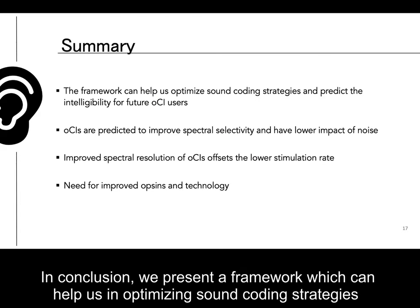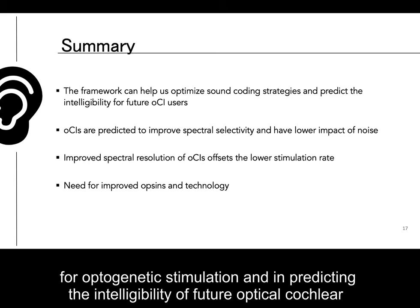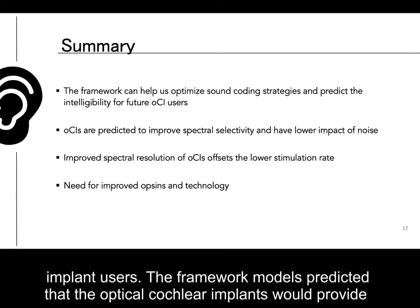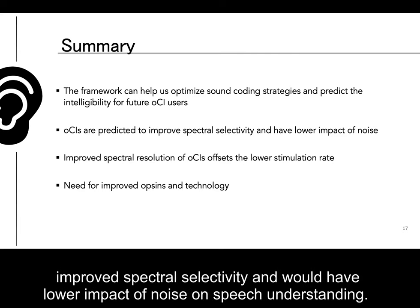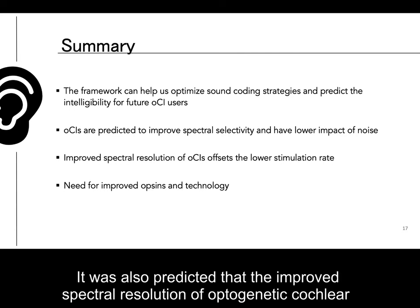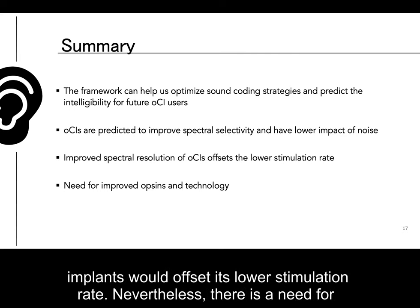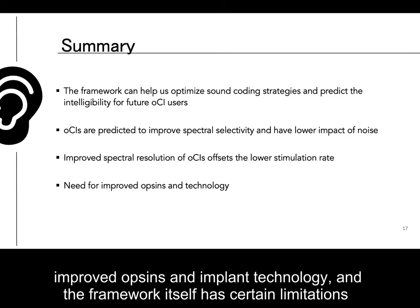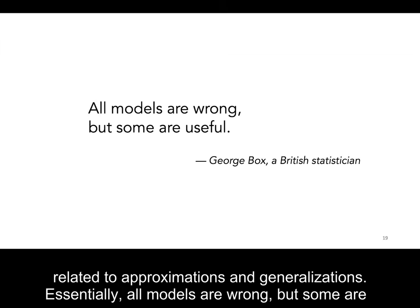In conclusion, we present a framework which can help in optimizing sound coding strategies for optogenetic stimulation and in predicting the intelligibility of future optical cochlear implant users. The framework models predicted that optical cochlear implants would provide improved spectral selectivity and lower impact of noise on speech understanding. It was also predicted that the improved spectral resolution of optogenetic cochlear implants would offset its lower stimulation rate. Nevertheless, there is a need for improved opsins and implant technology, and the framework itself has certain limitations related to approximations and generalization. Essentially, all models are wrong, but some are useful. I am happy to get your feedback on the usefulness of the presented framework.